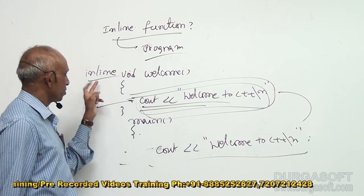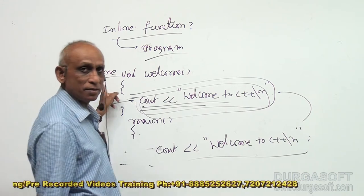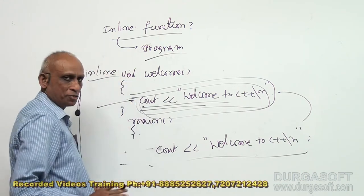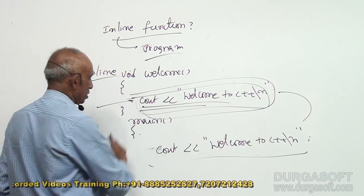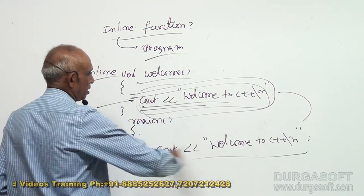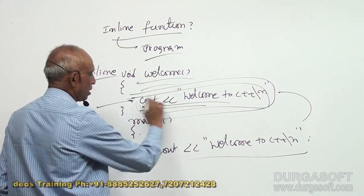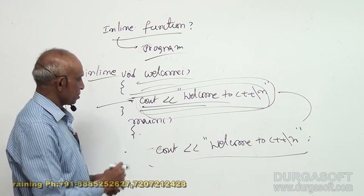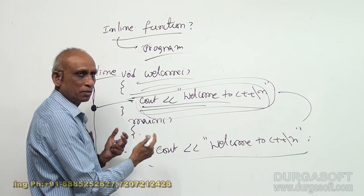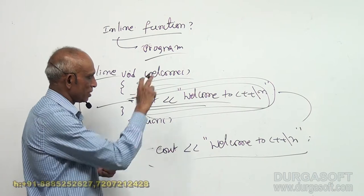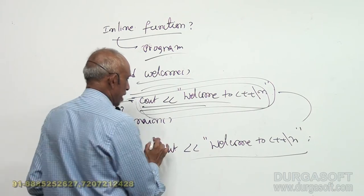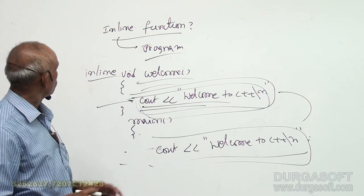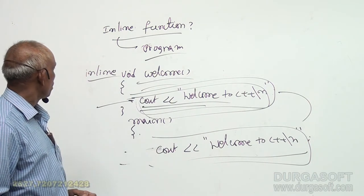Before the function definition, at the beginning, declare it as inline — i-n-l-i-n-e — then the function definition as usual. If you do this, then whenever there is a welcome function call, that call is removed and the actual code is substituted there. Because of this, instead of calling the function, storing the address, and then restoring it, that overhead is removed and time is saved.